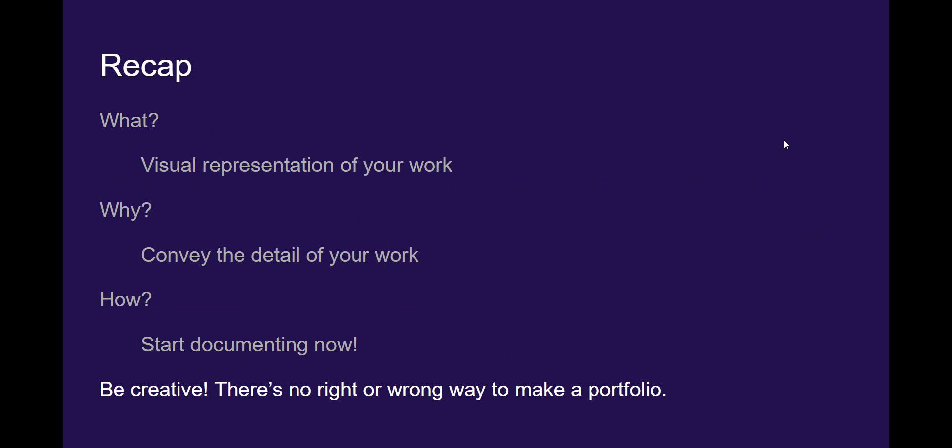Quick recap — what did we learn? What is a portfolio? It is a visual representation of your work. Why should you make one? Because it can convey more detail than a resume can. How would you make one? Just start documenting your projects now. Record all that information, and once you've completed your project, you can start creating your portfolio. Just be creative — there's no right or wrong way to make a portfolio. You can really include anything you want. A portfolio is essentially just a reflection of what you want to show other people — engineering projects, but also things like art or writing pieces that you think would help someone get more of an idea of who you are.